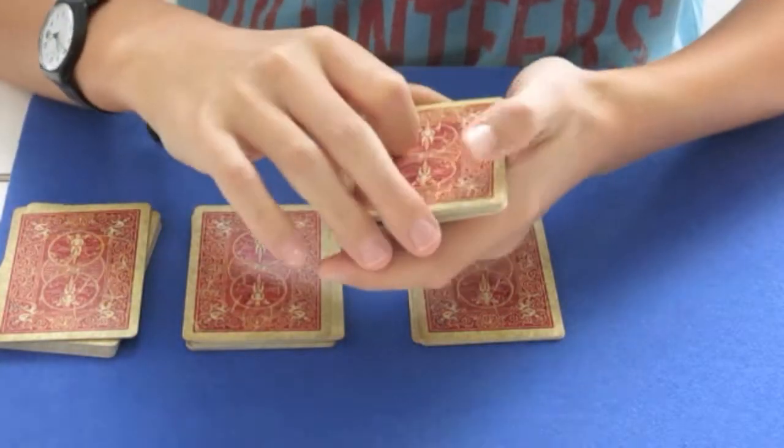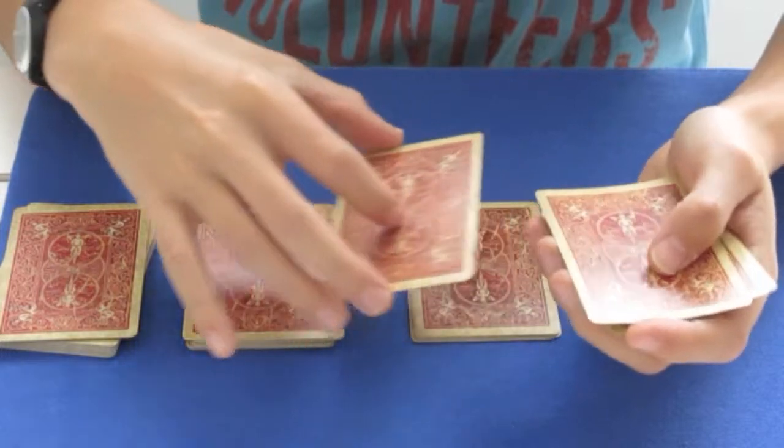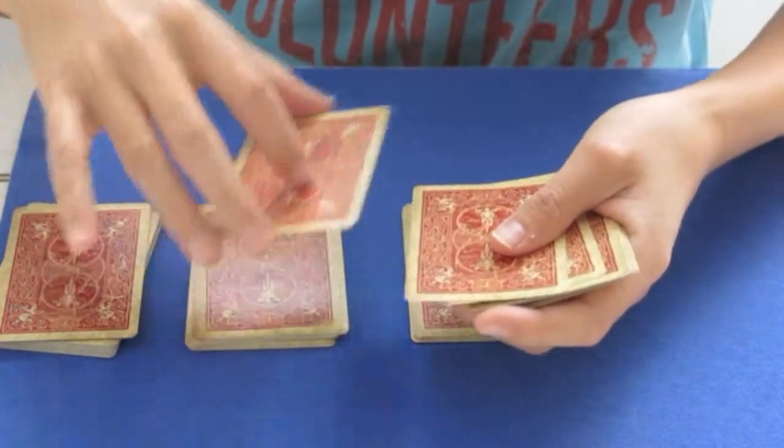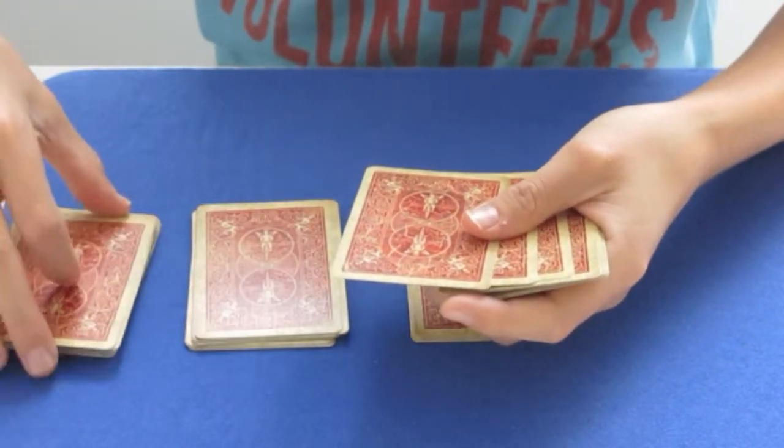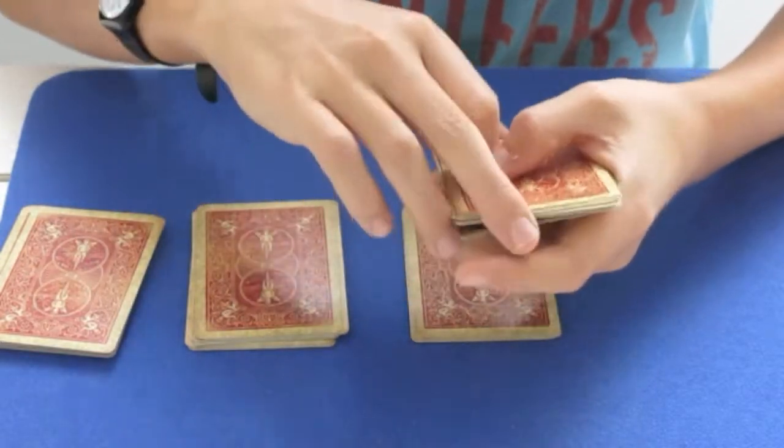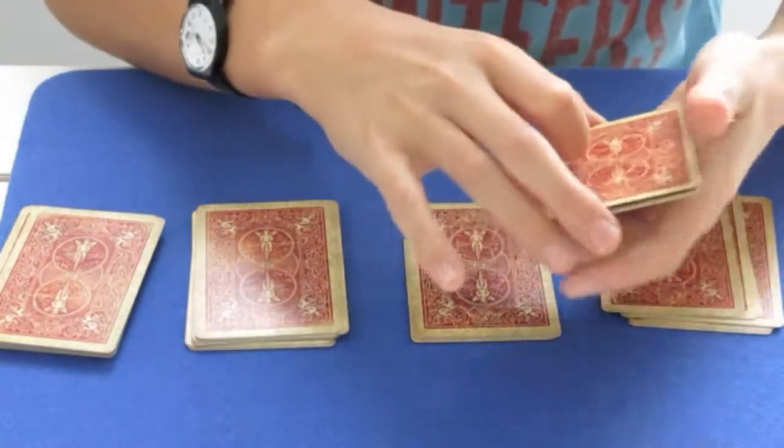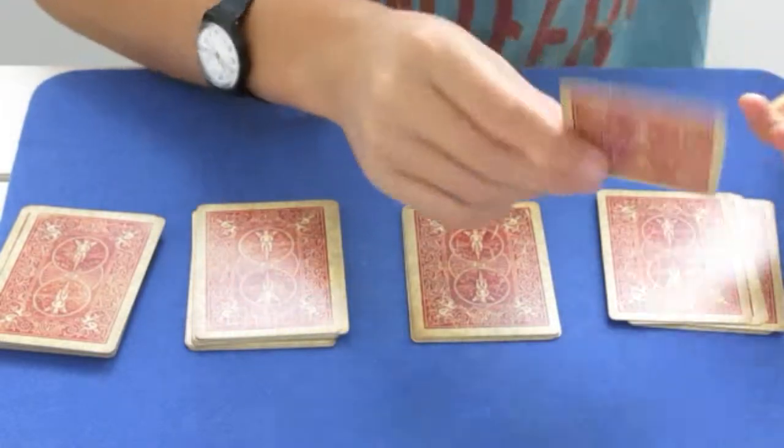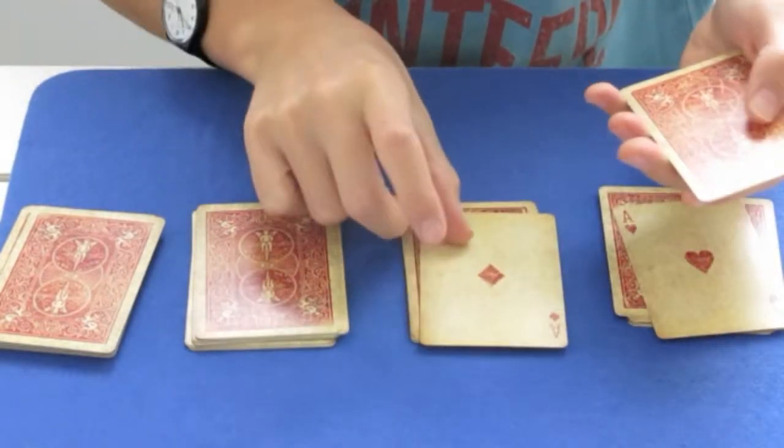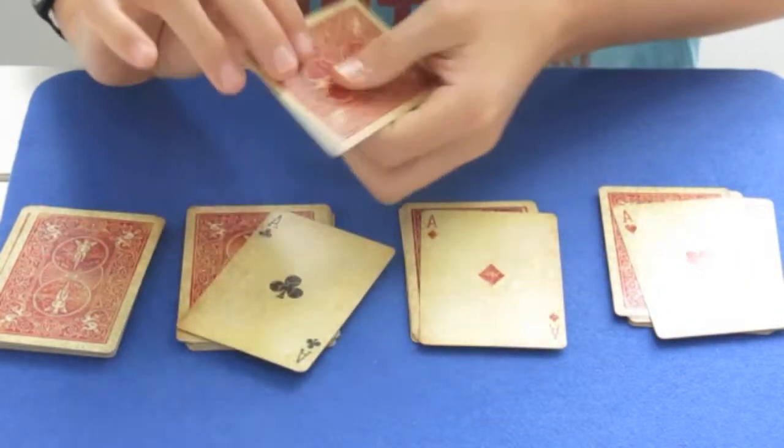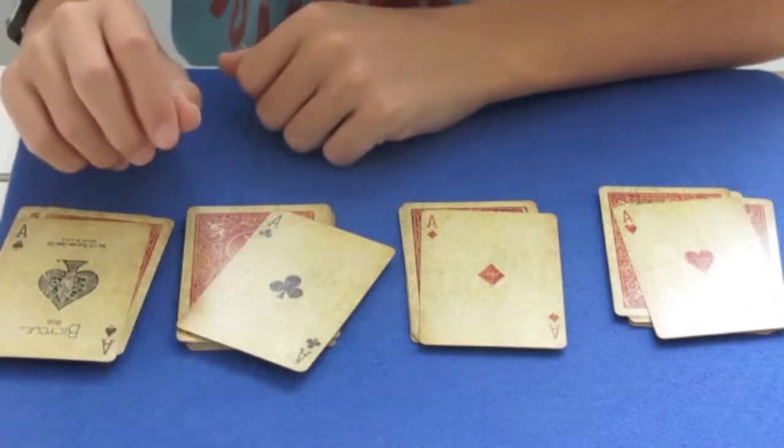And if we take this card, he cut on this card, this card, this card, and this card. And what's funny about it is that, look, if I take these cards, it's 1 ace, 2 aces, 3 aces, and 4 aces. Isn't it amazing?